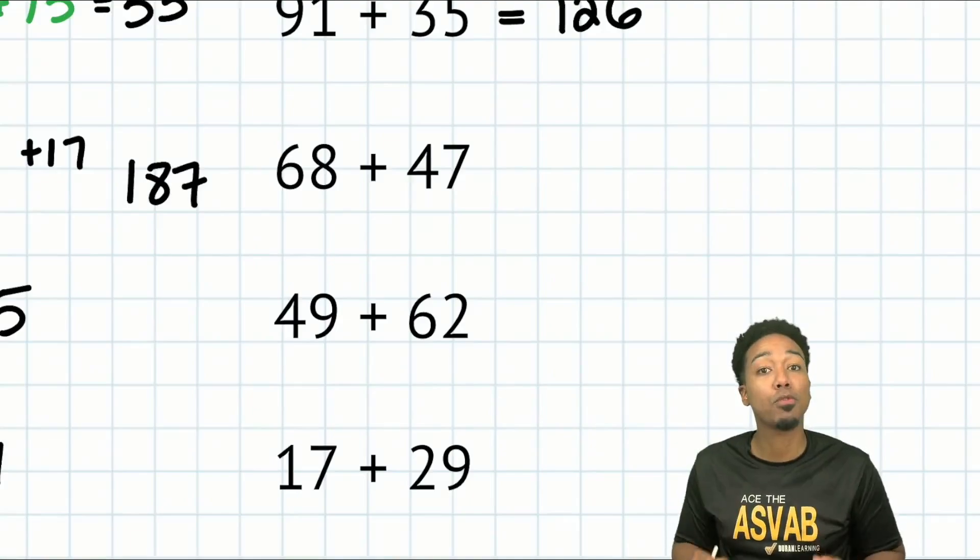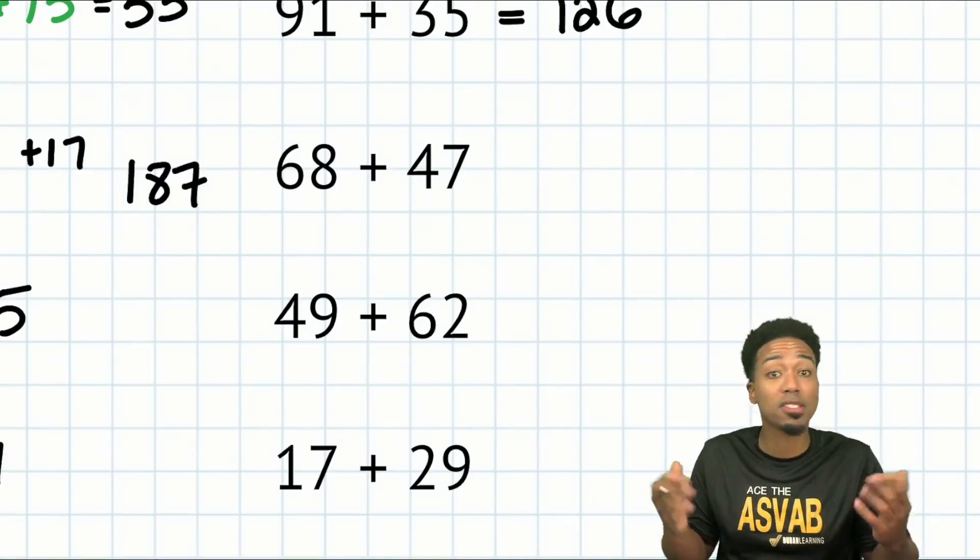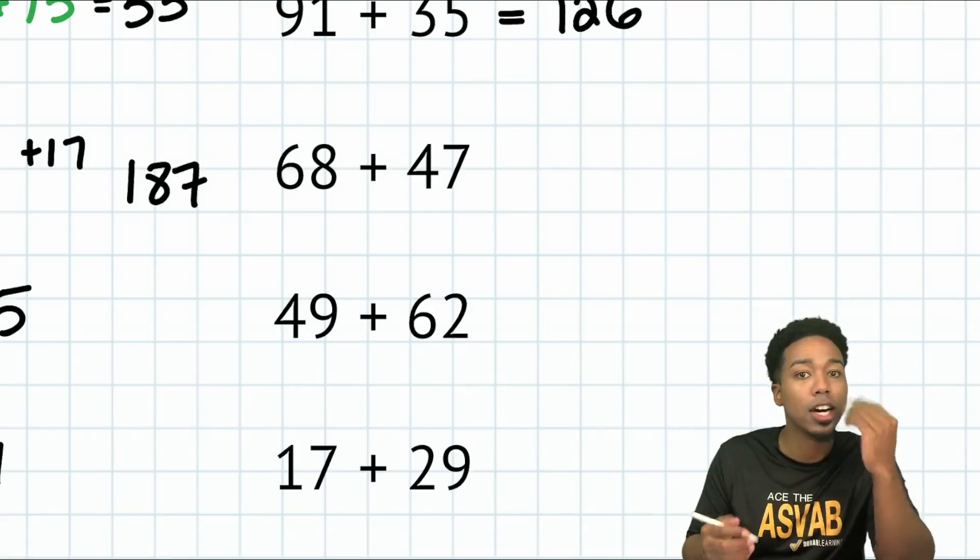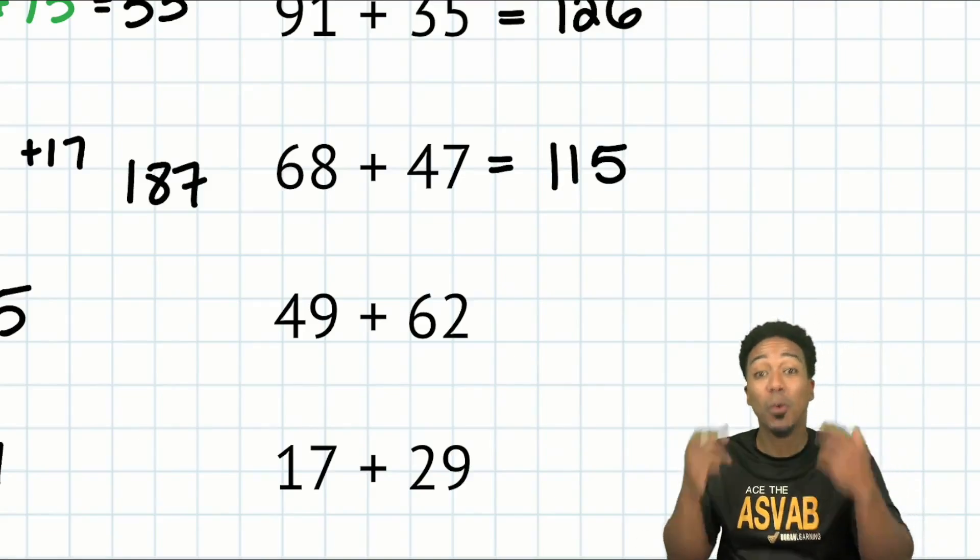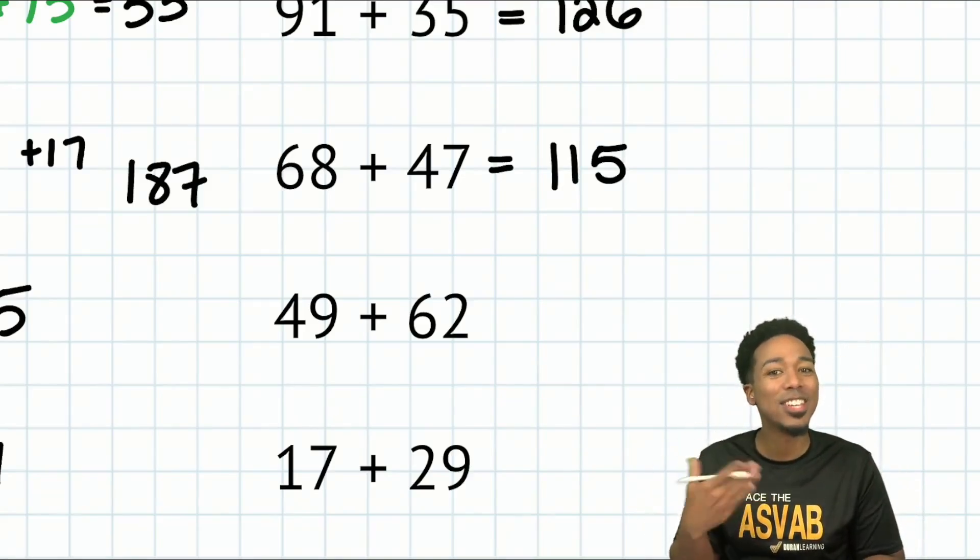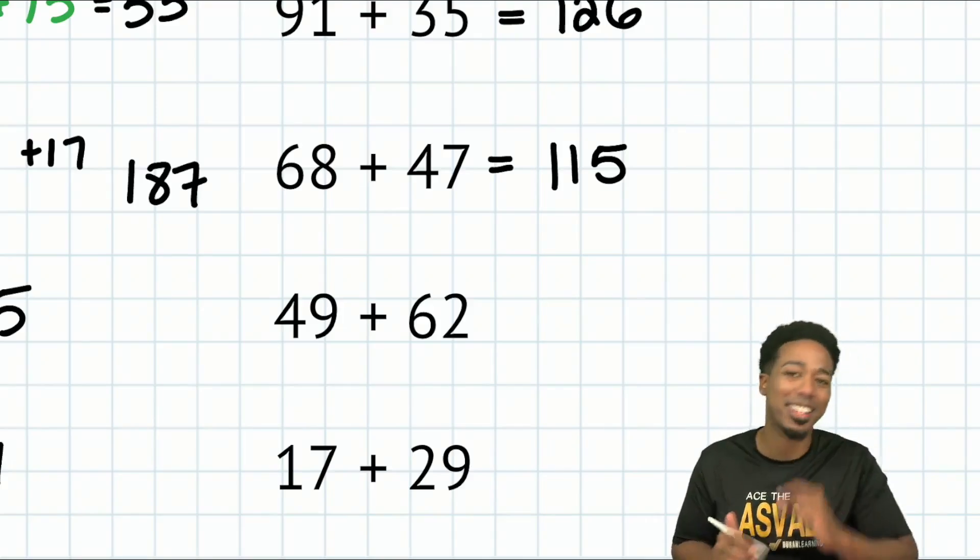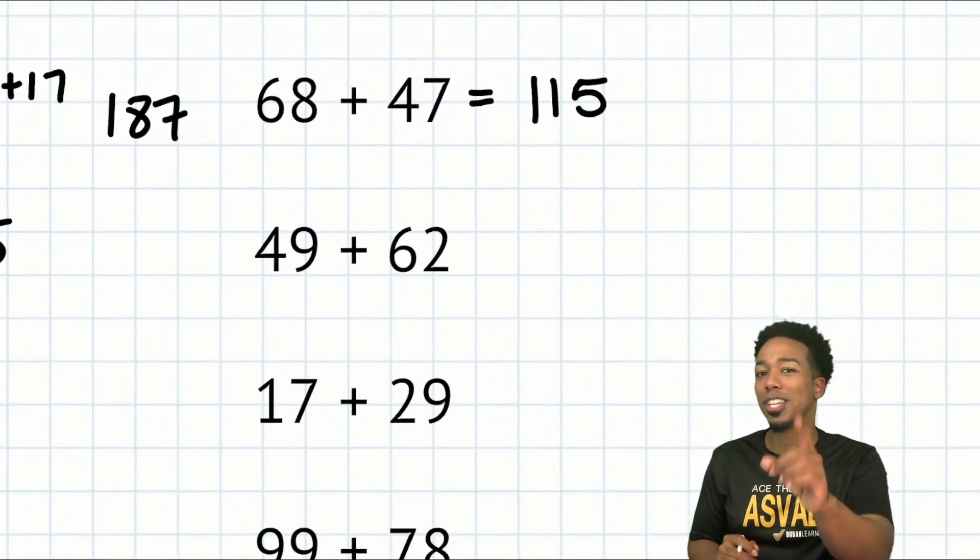Next up, 68 plus 47. 60 and 40, that's 100. 8 and 7 is 15. 115. You're done. So notice I'm going a little faster now to show you how quickly you can actually think about this in your head with just a little bit of practice. And again, tomorrow we have subtraction. So stay tuned. Make sure you're following me on this channel.